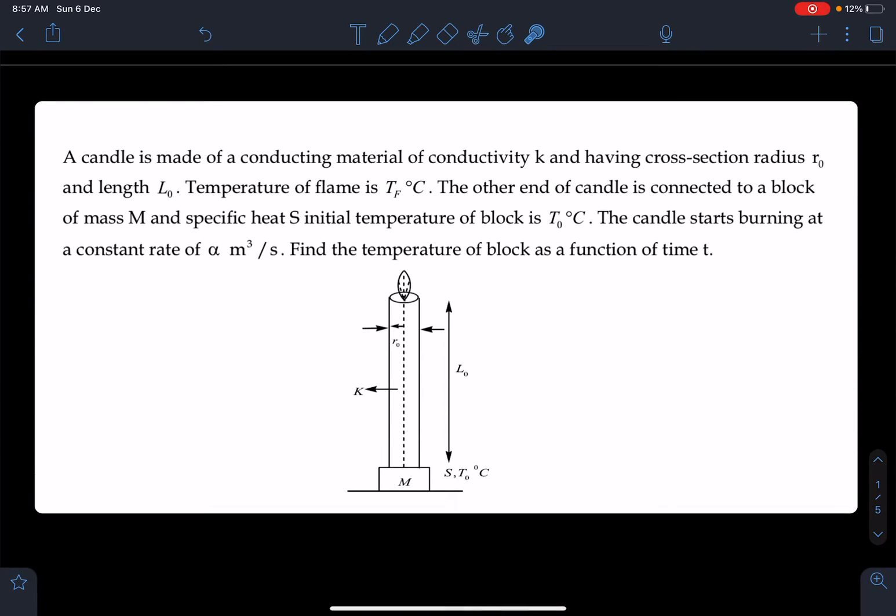A candle is made of a conducting material of conductivity k and having cross-section radius r₀ and length L₀. The temperature of the flame is Tf degree centigrade and the other end of the candle is connected to a block of mass M and specific heat s. Initial temperature of block is T₀ and the candle starts burning at a constant rate of α meter cube per second. Find the temperature of block as a function of time.